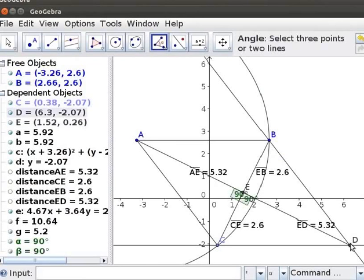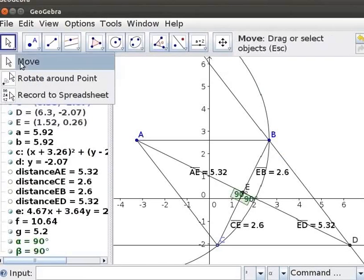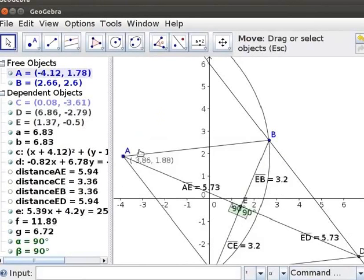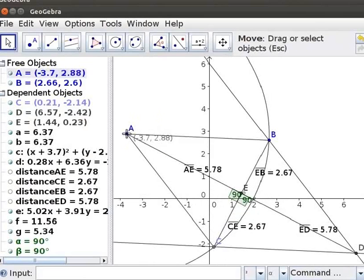Let us now select the Move Tool from the Toolbar. Use the Move Tool to move the Point A. Click on the Move Tool. Place the Mouse Pointer on A and drag it with the Mouse. Notice that the Diagonals always bisect each other and are perpendicular bisectors.